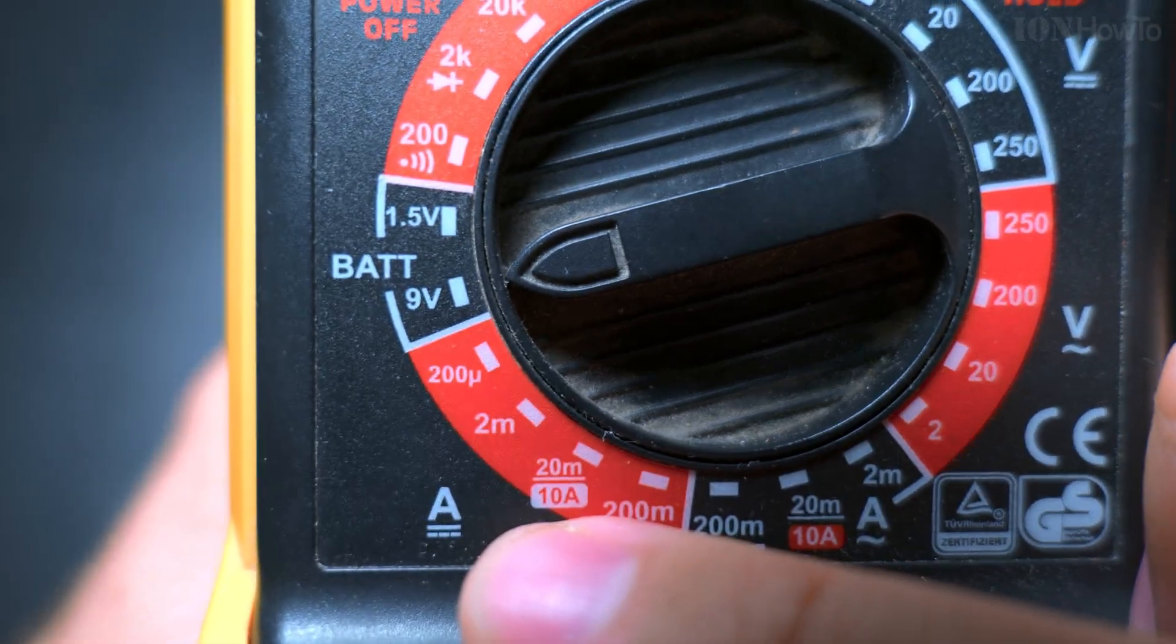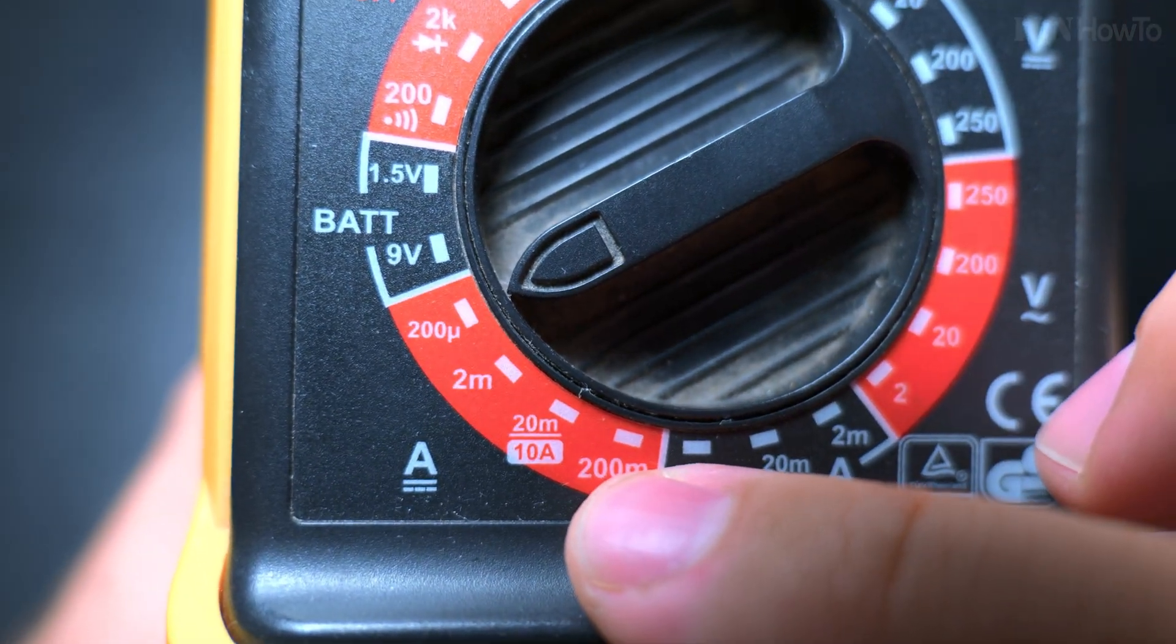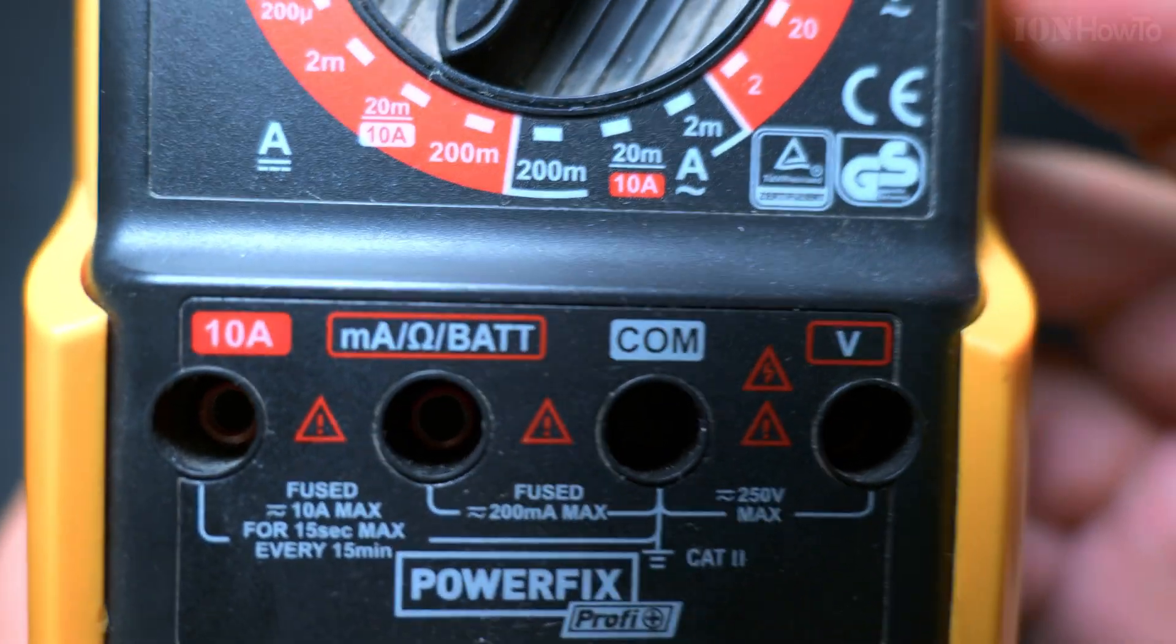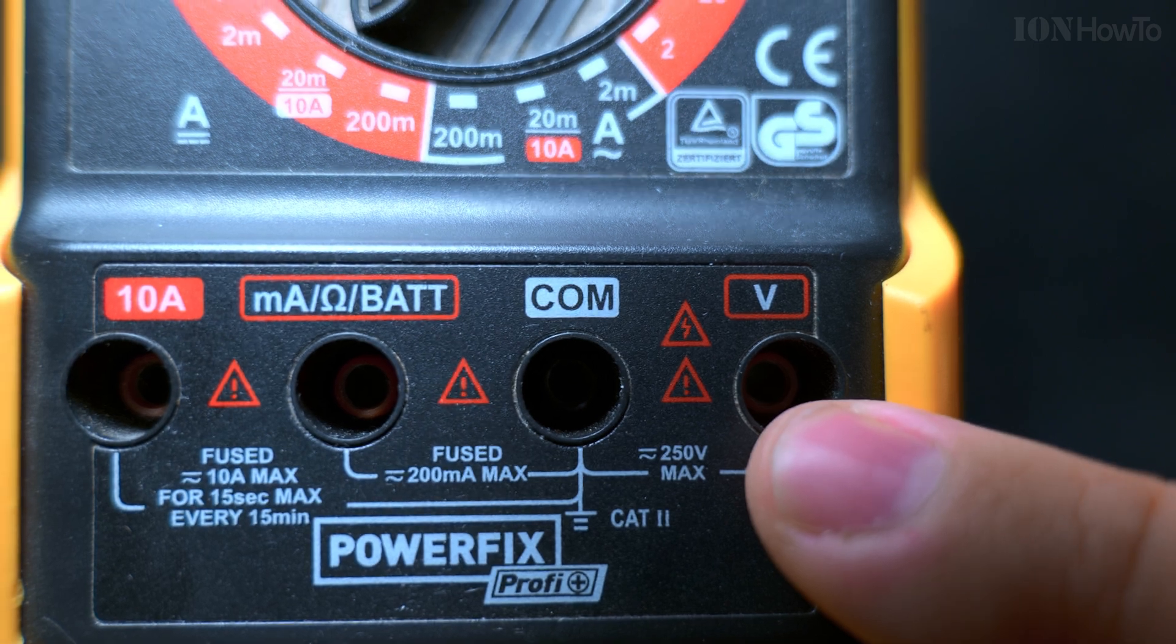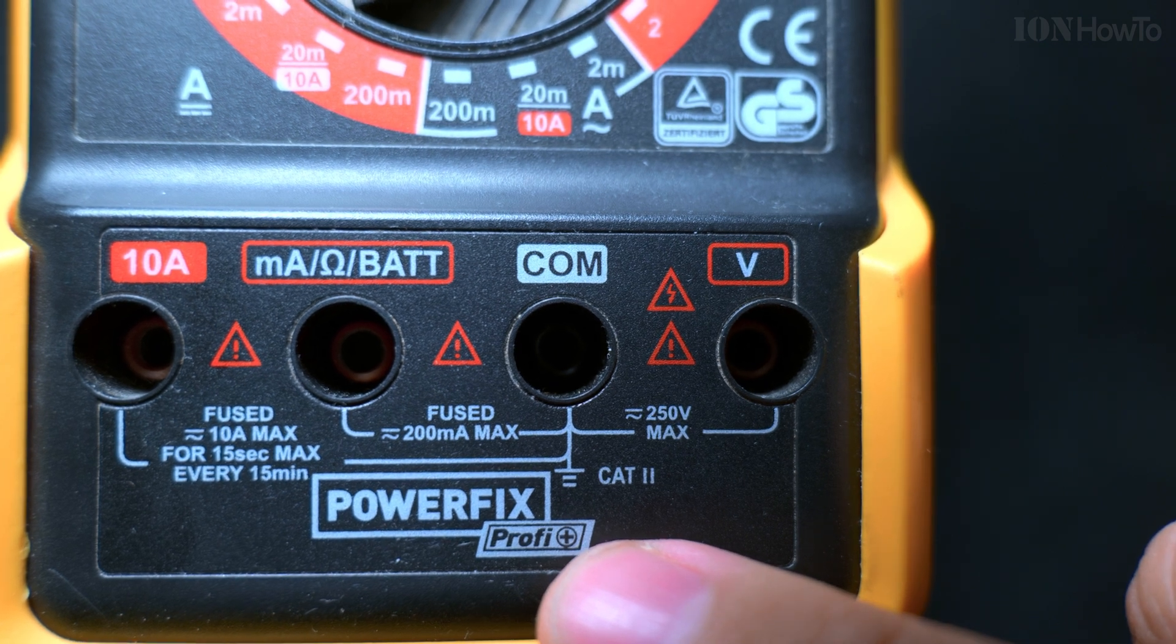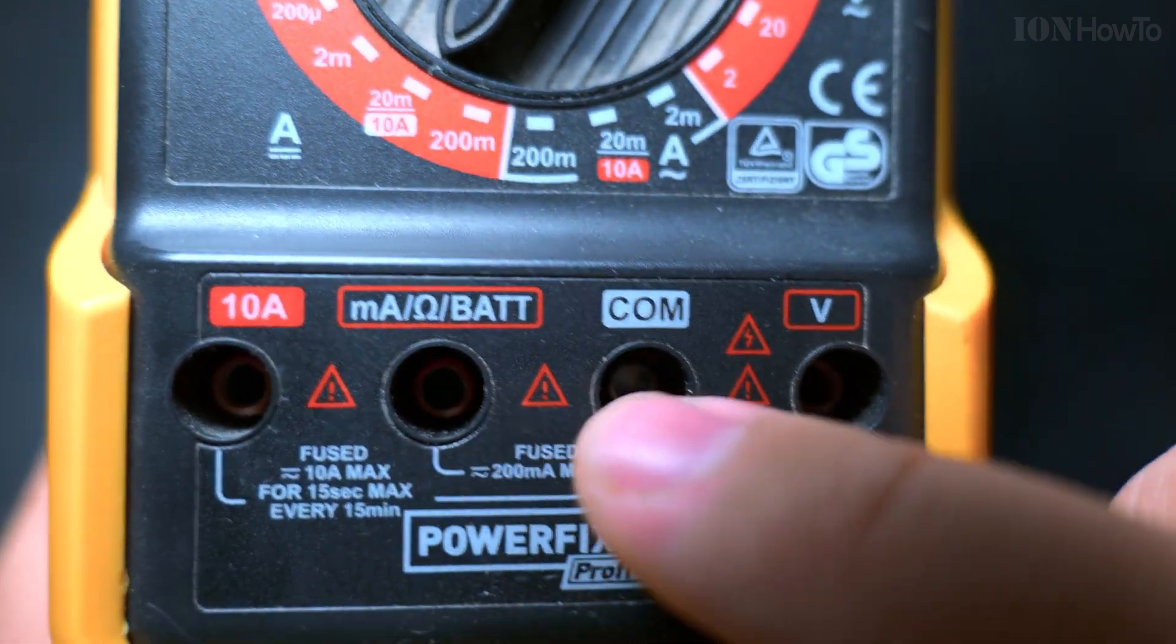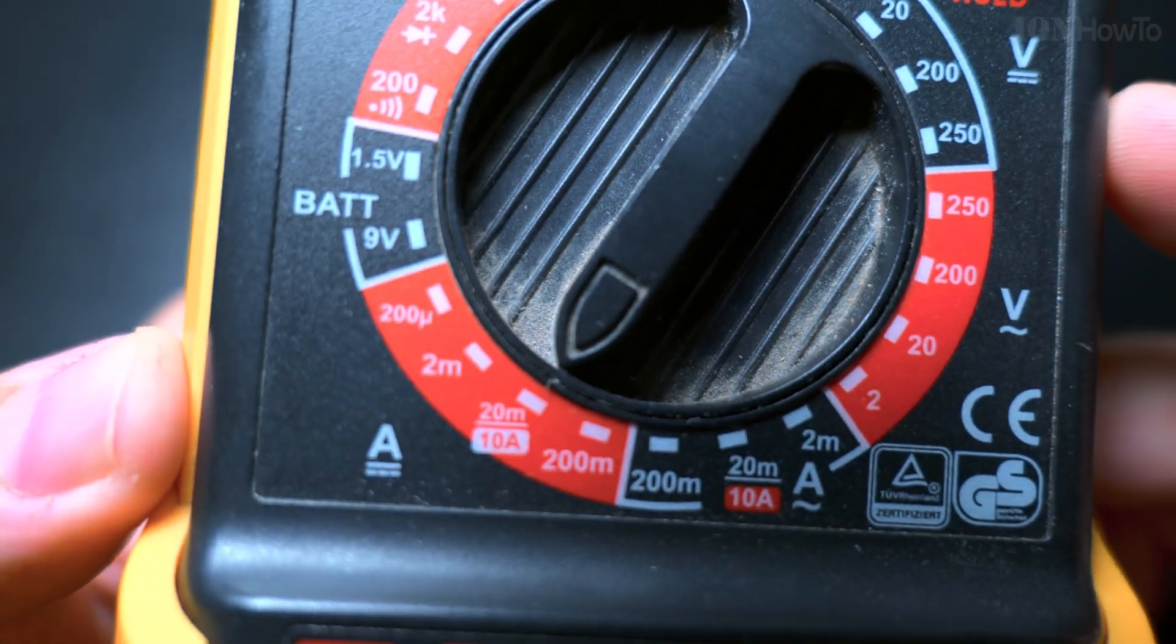This is the current sign, amps or ampere, and here is 200 microamperes. There are different settings here. 10 amps is a separate connection. The COM is always the black, and depending on what function you use, you can use the volts or the ampere, resistance, or battery options - milliampere, microampere. This is 200 milliampere now.